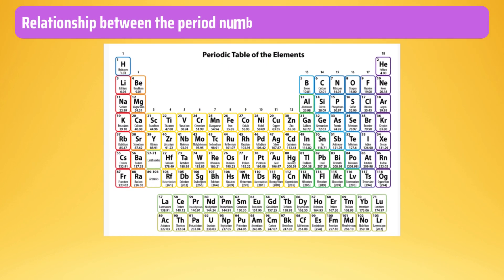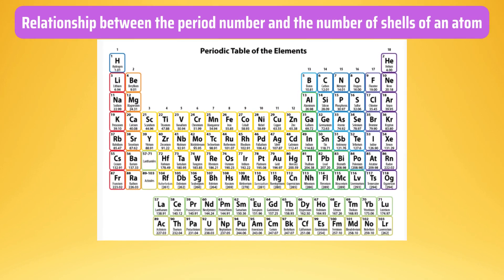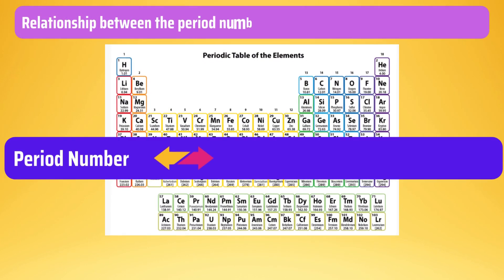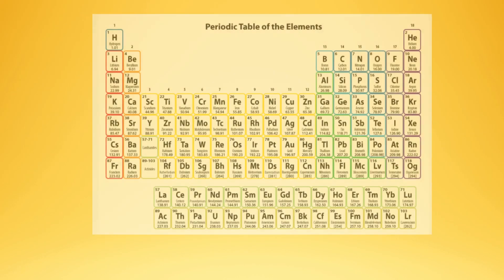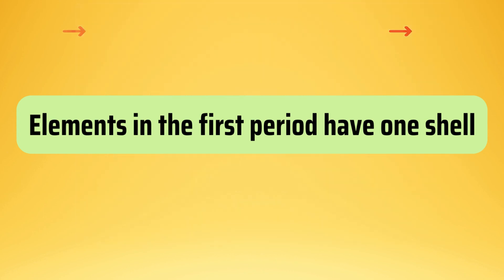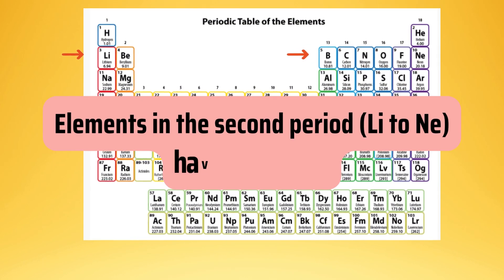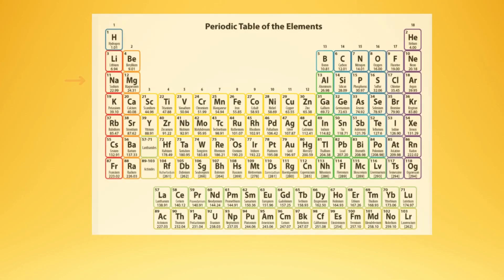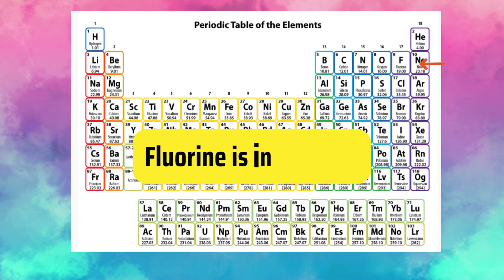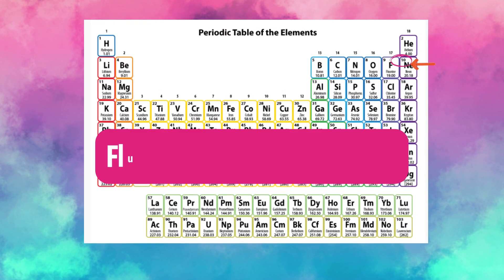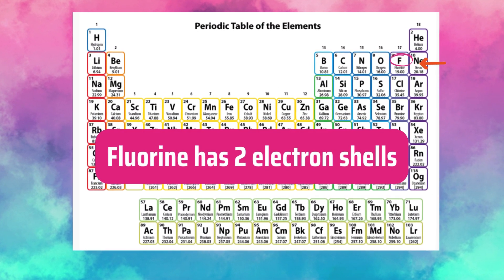Let's look at the relationship between the period number and the number of shells of an atom. Period number corresponds to the number of shells of the atom. For example, elements in the first period have one shell, those in the second period have two, those in the third period have three shells, and so on. For example, fluorine is located in period 2 of the periodic table. Therefore, fluorine has two electron shells.